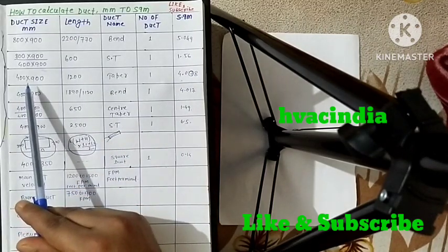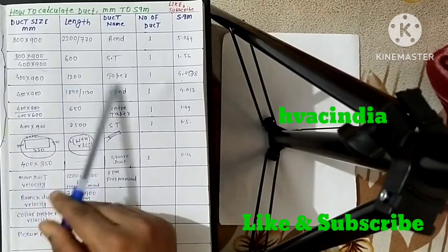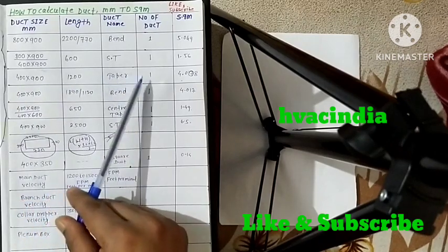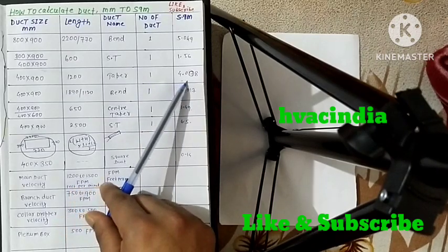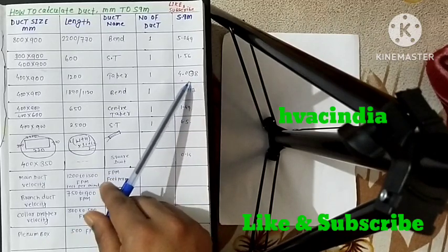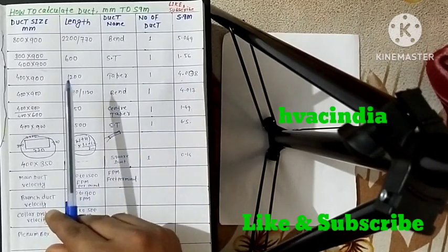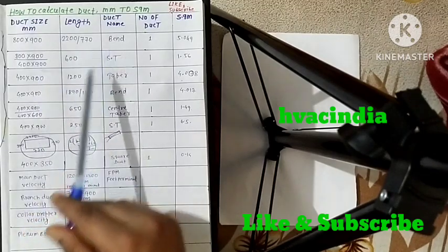Then a simple duct is 400 by 900, length is 1200, taper duct is 1 and this is 4.0008 square meter. Same formula is 2 into h plus w into l. For taper band, the formula is 1 by 2 into h plus w into l.